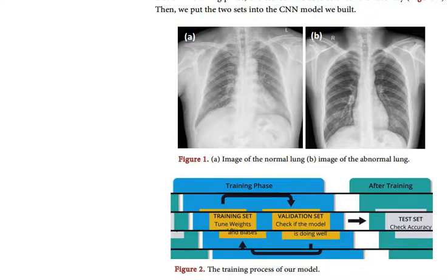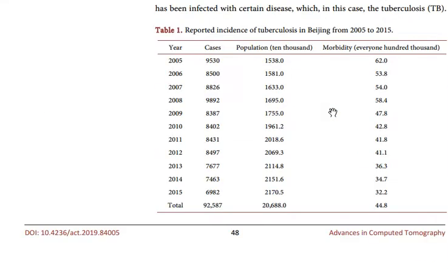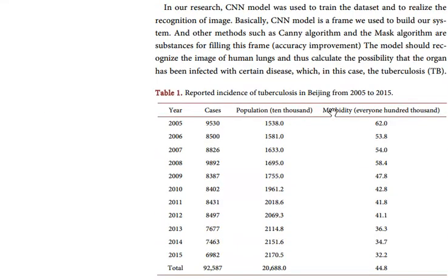The mortality of tuberculosis is also more than 13% in the past few years. The reported incidence of tuberculosis in Beijing from 2005 to 2015 is also presented.